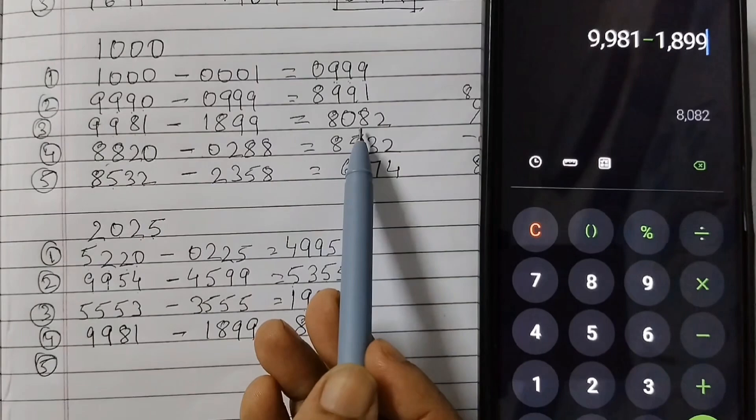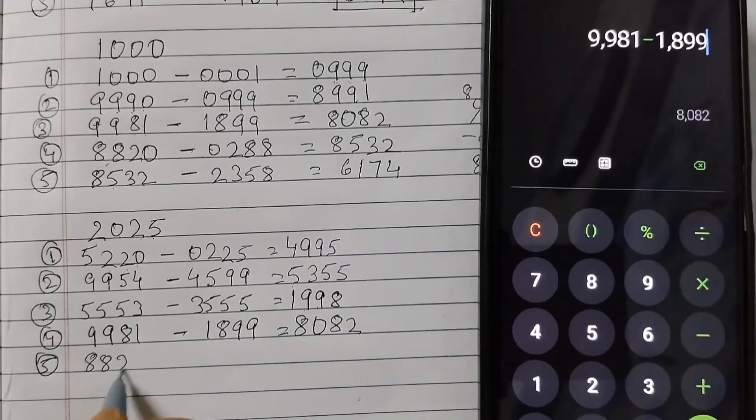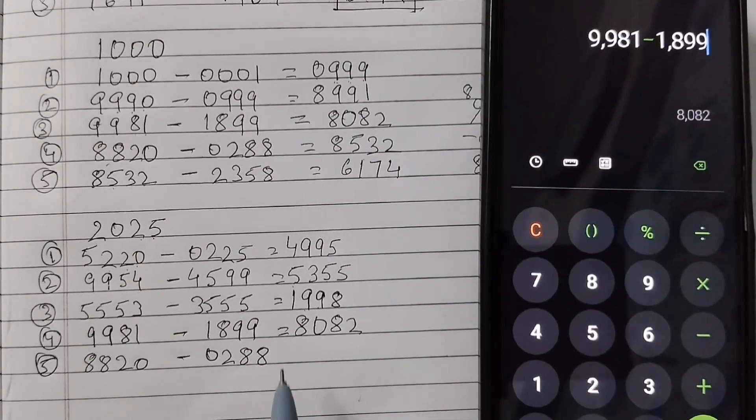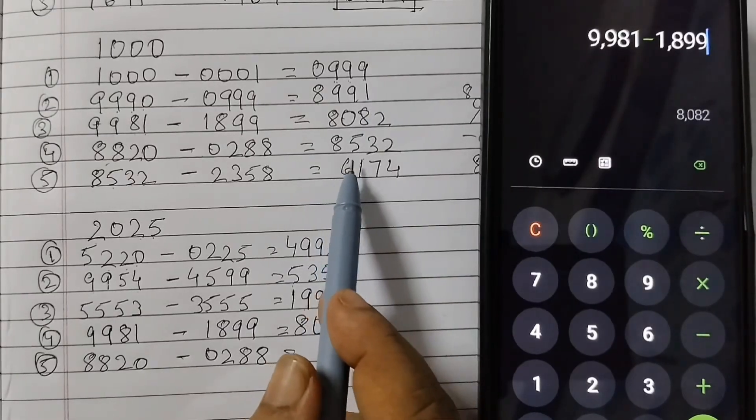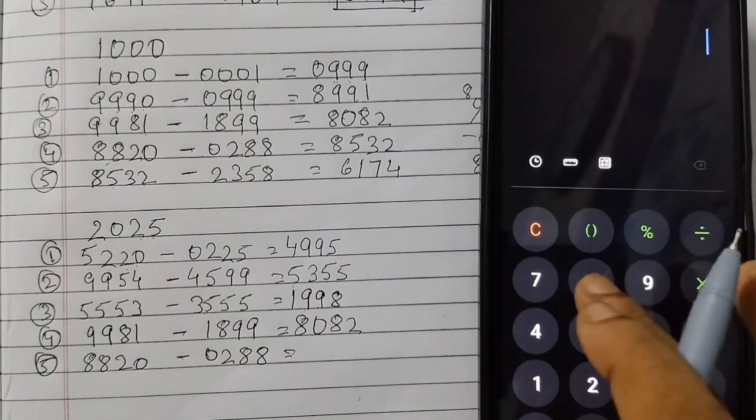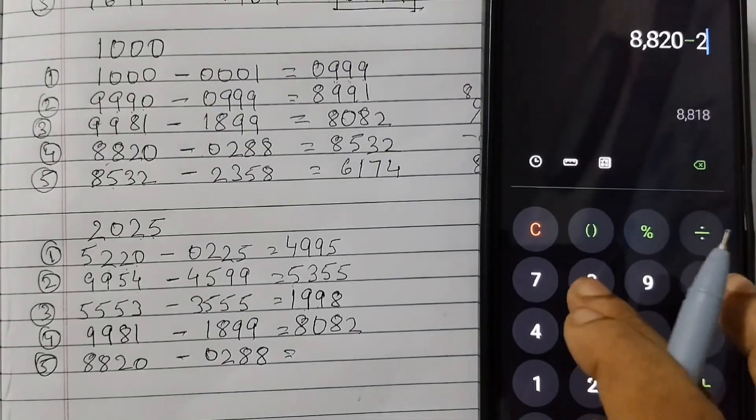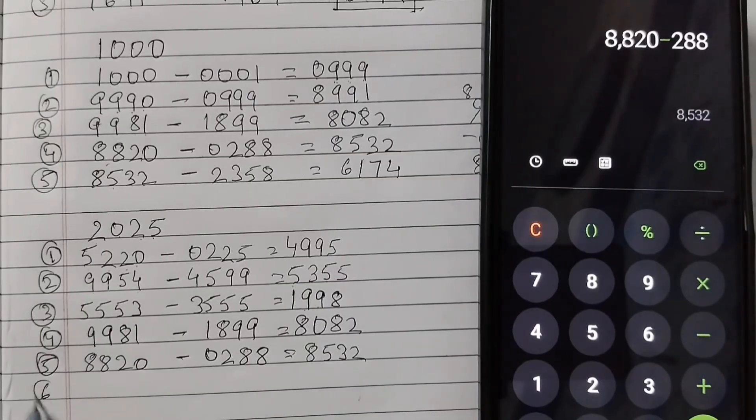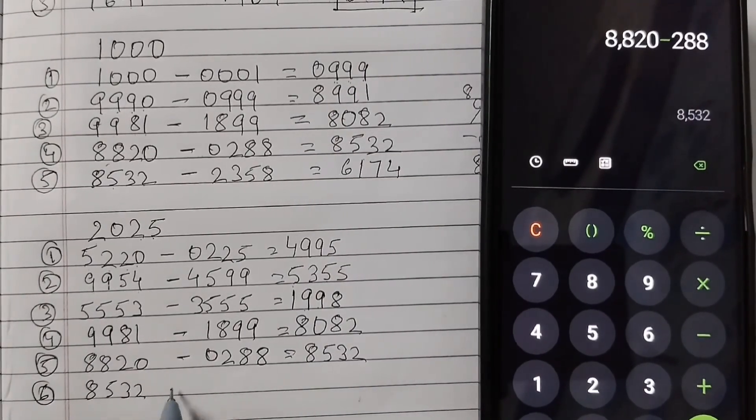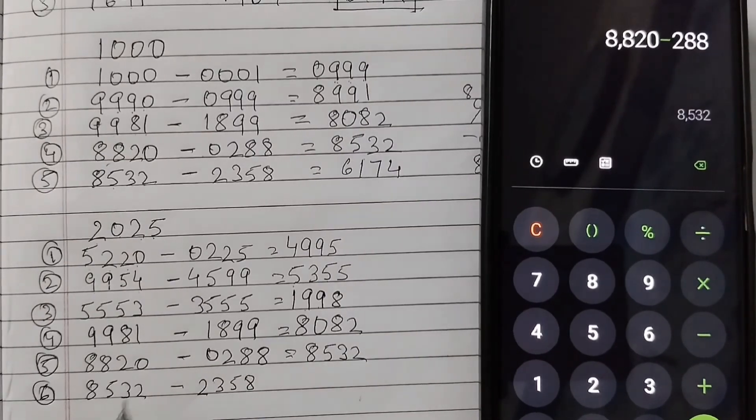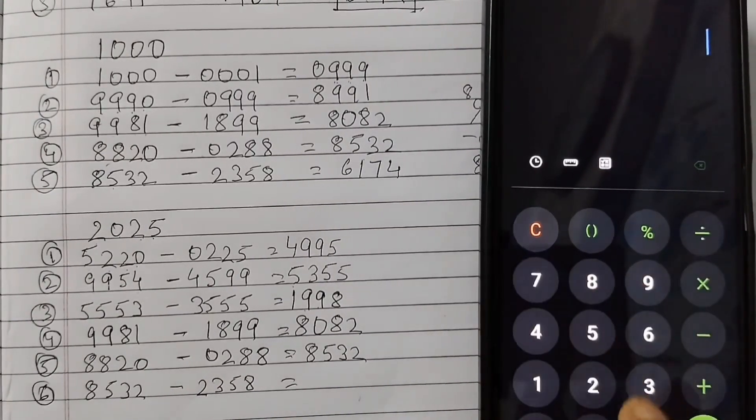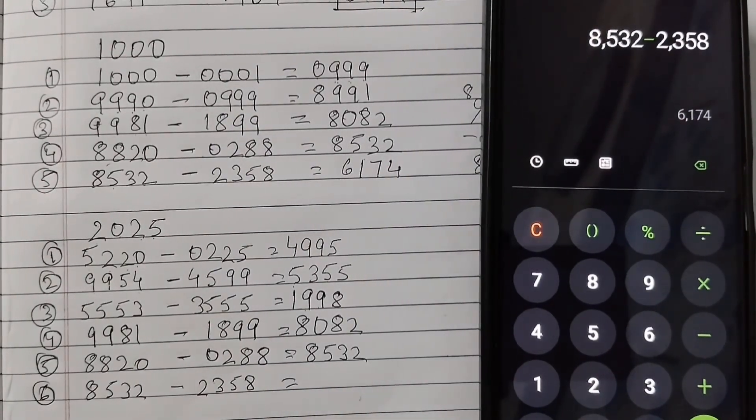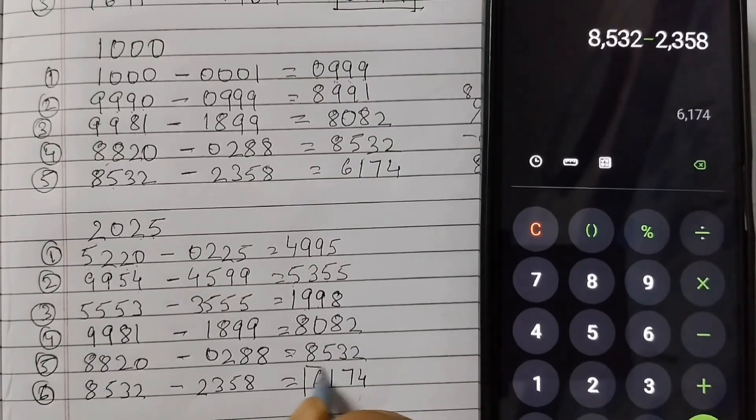So we have reached the same number here. Now 8820 minus 0288, largest number minus the smallest number, that would be equal to 8532. You can see in the calculator also, 8820 minus 0288, that's 8532. Sixth step: 8532 minus 2358, the reverse order. And we already know when we do this, 8532 minus 2358, we get the Kaprekar constant 6174.